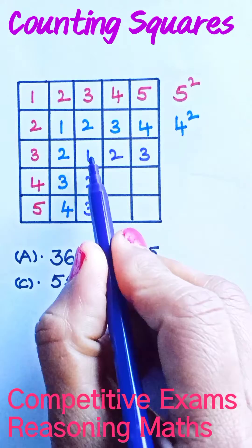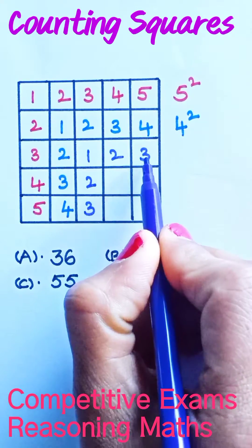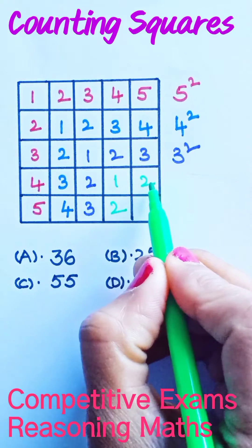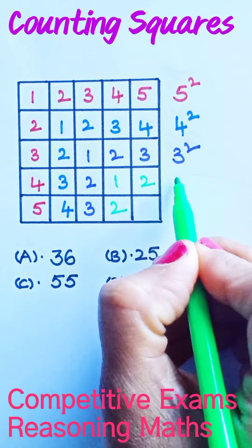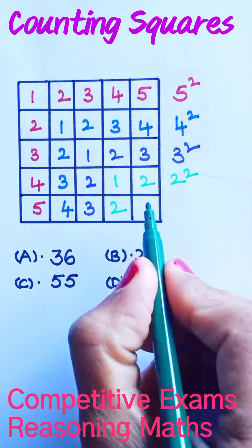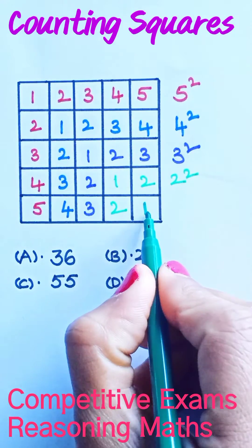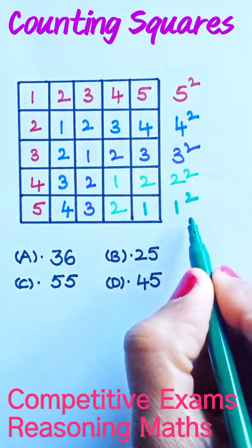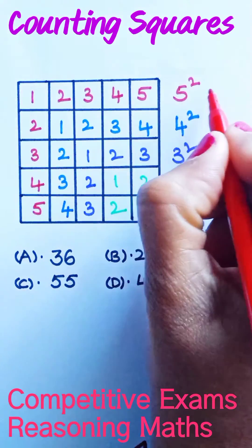Here there are three rows and three columns, so let us take the square of three. Here there are two rows and two columns, so let us take the square of two. Now we have only one row and one column left, let us take the square of one.